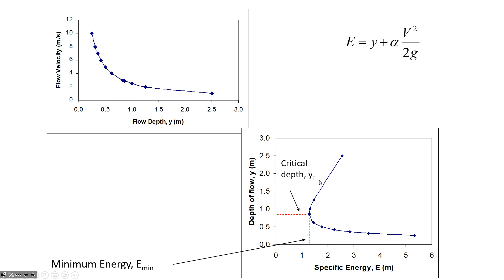You may remember the flow regime concept from when we calculated the Froude number. A Froude number greater than 1 is supercritical flow; less than 1 is subcritical. Here's another way to determine whether conditions are super or subcritical: compare the flow depth to the critical depth. If your water is flowing at a depth greater than 0.86 meters in this example, that would be subcritical flow.